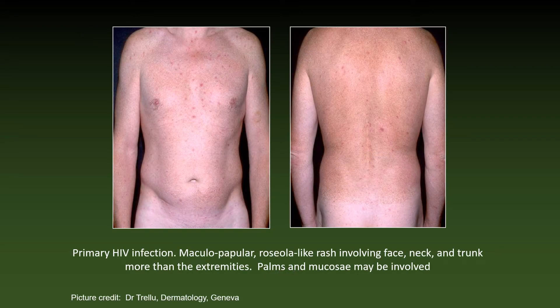Here are two photographs of the typical rash of primary HIV infection. Note the maculopapular roseola-like lesions involving the face, the neck, the trunk more than the extremities. However, palms and mucosal surfaces may also be involved.